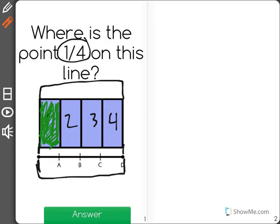And if we colored the same amount on the number line, you would see that we would stop at point A, meaning that point A is equal to one-fourth.